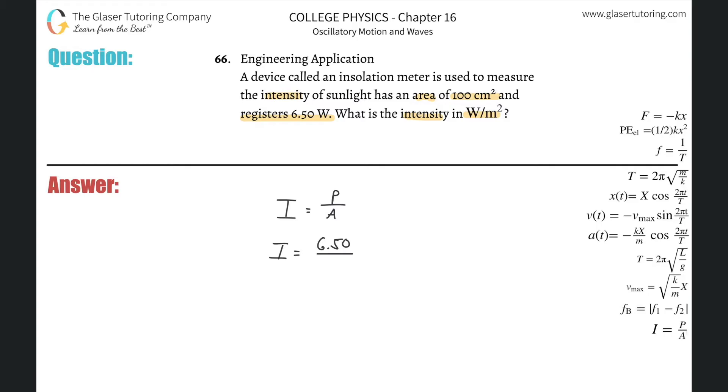So what we simply have to do here, we can do the conversion on the side. 100 centimeters squared times centimeter on the bottom, meter on the top. One meter is 100 centimeters, that's 1,000.